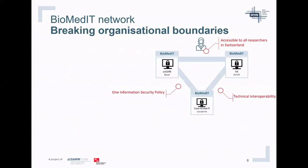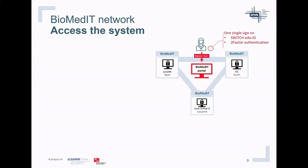The three nodes are connected, which is what we work on when addressing technical interoperability. There is one information security policy underlying this entire system — all nodes and experts agreed on it as the BiomedIT standard. The BiomedIT network is accessible to all researchers in Switzerland; from every university, everybody can access and use the network for research. The project lead can register through the BiomedIT portal, which is the central entrance with single sign-on using SWITCHeduid and two-factor authentication.